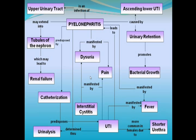Interstitial cystitis is often confused with UTI as presenting symptoms are markedly similar. It is also manifested by dysuria and pain in the suprapubic region.